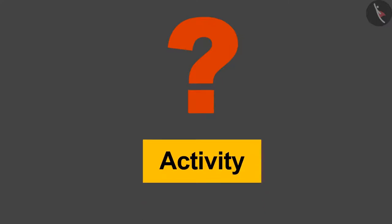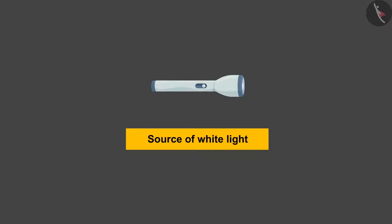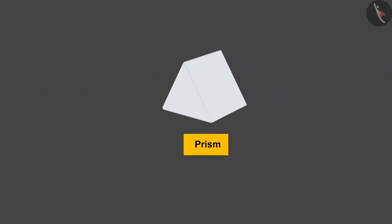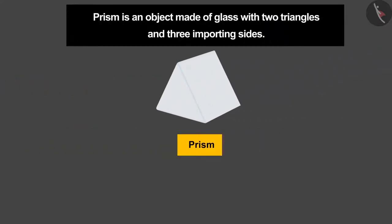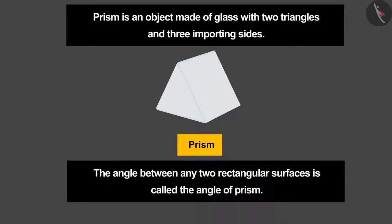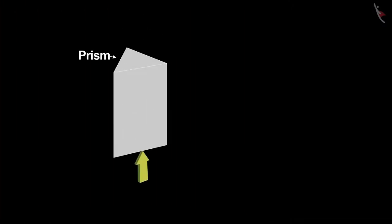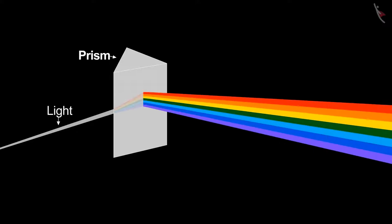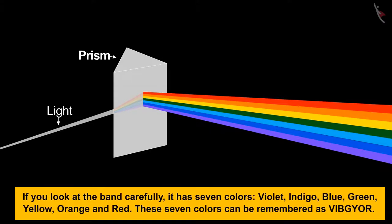To find the answer to the first question, let's do an activity. We need a source of white light and a prism. A prism is an object made of glass with two triangular and three rectangular surfaces. The angle between any two rectangular surfaces is called the angle of prism. In a dark room, place the prism on the base of the triangle and focus light on any of the rectangular surfaces. As soon as the light falls into the prism, on the other side you will see a band of colors.